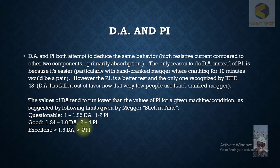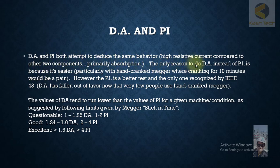Both DA and PI attempt to reduce the same behavior — high-resistance current compared to the other two components, primarily absorption current. The only reason to do DA instead of PI is because it's easier, particularly with a hand crank megger, as cranking for 10 minutes would be painful. However, PI is the better test and the only one recognized by IEEE 43.